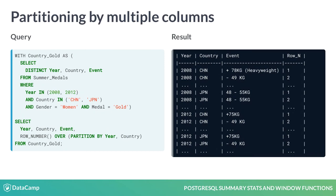As you can see in the result, the row number resets to one for each partition. You can partition by multiple columns if your groups are spread across columns.